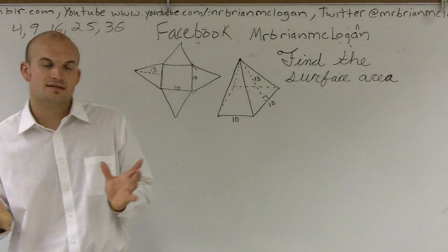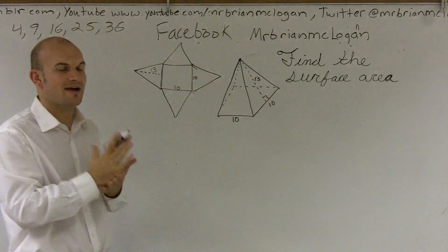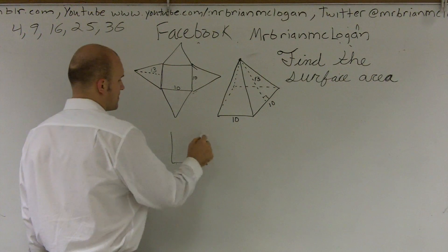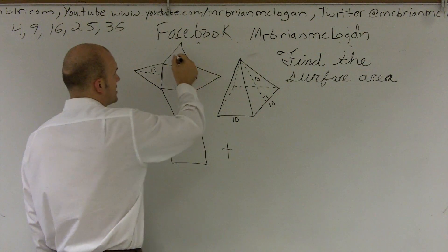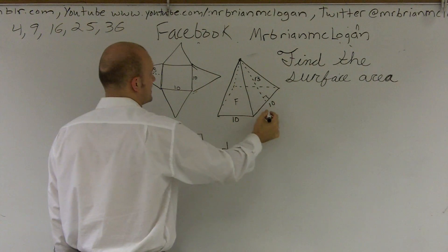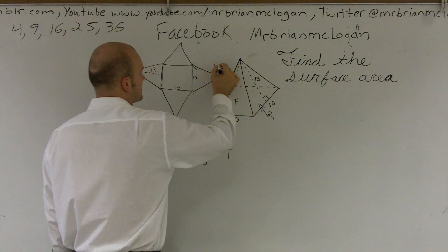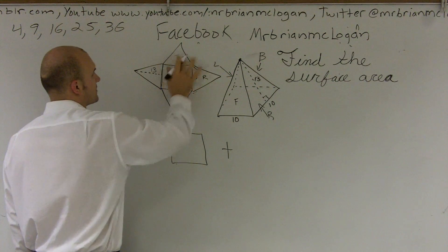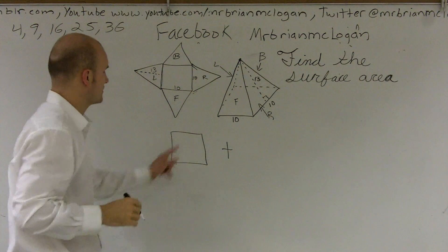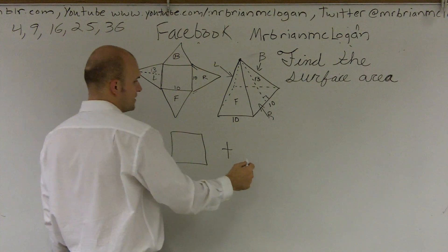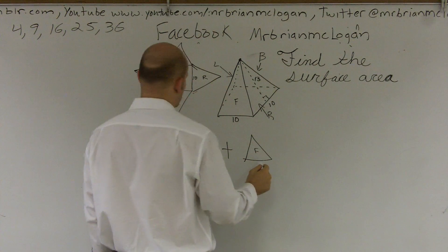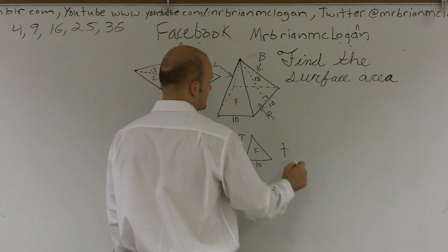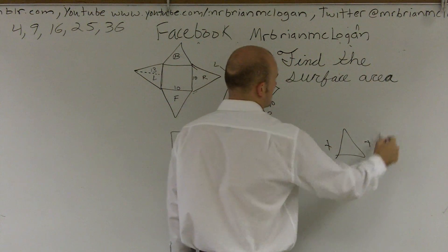So when you're finding the surface area, the best tip I can give you is to break it up and find every single possible area that you can, then add them all up at the end. So the first thing I have is a square base, plus let's call this the front triangle, then the right side, the left side, and the back side. So I have: front, right, back, left — and then the base.